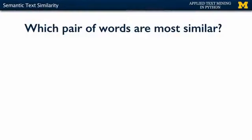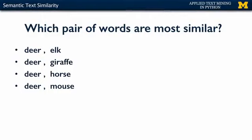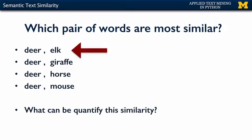Welcome back. In this video, we are going to talk about semantic similarity. Right at the start, I'm going to ask you a question: which pair of words are the most similar? You have deer and elk, deer and giraffe, deer and horse, and deer and mouse. Hopefully, you would have given the answer as deer and elk. But how can you quantify this? Why do deer and elk appear to be more similar than the other animals?